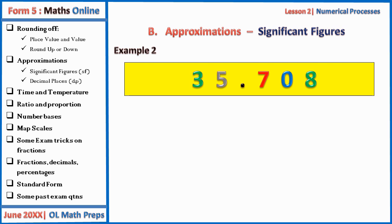Another example: the number 35.708. To one significant figure this gives us 40. Note the first significant figure here is three, but five is going to affect it — we round up by one to add to three, giving us four. Since the number before the decimal point is 35, when you round up it gives us 40. We erase everything from the decimal point rightward, giving us 40 to one significant figure.